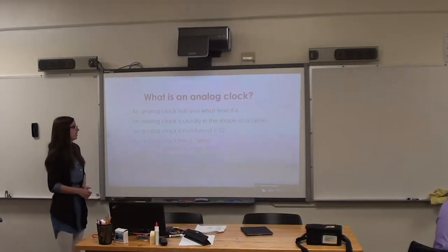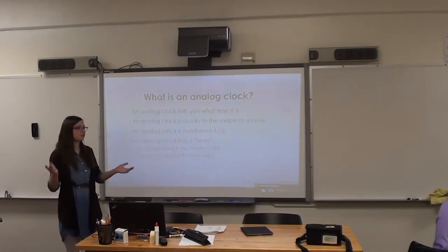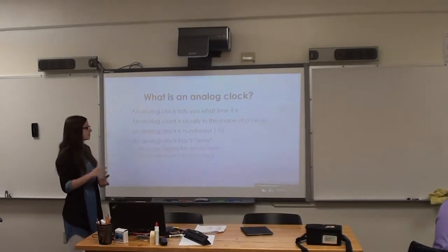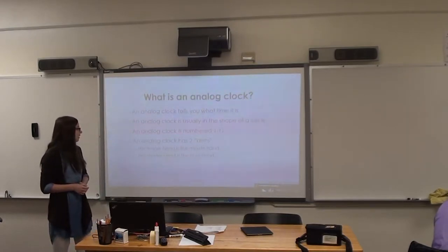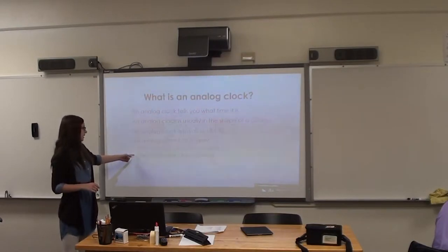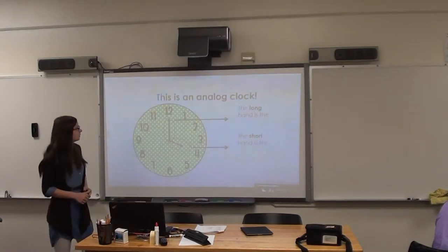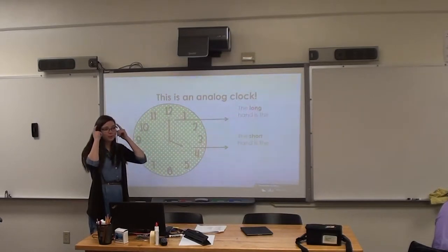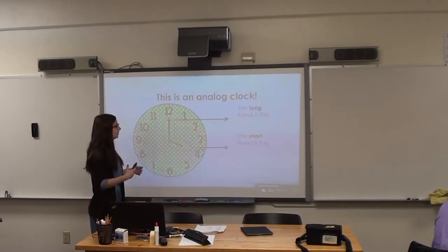So what is an analog clock? An analog clock tells you what time it is. An analog clock is usually in the shape of a circle. If you can look over there, that's what it looks like minus the flowers, but we'll get to that. An analog clock is numbered 1 to 12. An analog clock has two arms. The longer hand is the minute hand, and the shorter hand is the hour hand. This is an analog clock, and I said 'analog clock' a lot because I really want you guys to remember that this is one type of clock and the name of it.